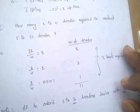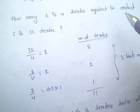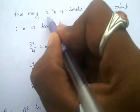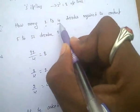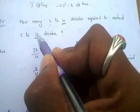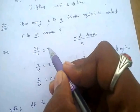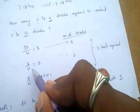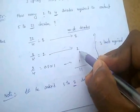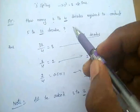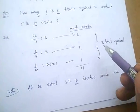Now an important example problem for PSU exams: how many 2-to-4 decoders are required to construct a 5-to-32 decoder? The technique is to divide 32 by 4, which equals 8 — so 8 decoders are needed at the first level. Divide 8 by 4 again to get 2, then 2 by 4 gives 1. Total: 8 + 2 + 1 = 11 decoders required, with 3 levels.